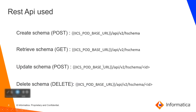There are four operations available for hierarchical schema REST API. The first one is the Create Schema, where we create a new schema in IICS. Then there is Retrieve Schema, Update Schema, and Delete Schema.